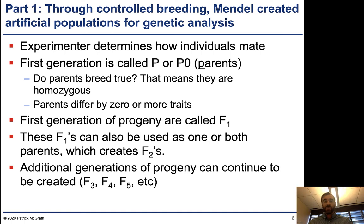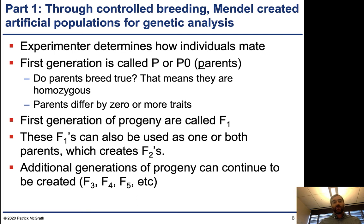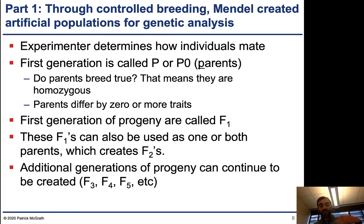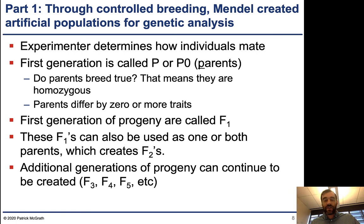You can be looking at multiple characters where the parents can either be the same or look different. The first generation of progeny produced from those parents is called F1s. If the F1s are then used as parents to create a further generation, the next generation is called F2s, and additional generations of progeny can continue to be created. In this class, we're only going to concern ourselves with the P0, the F1, and the F2 generation.